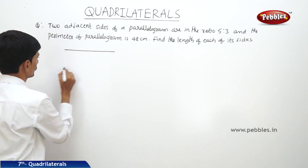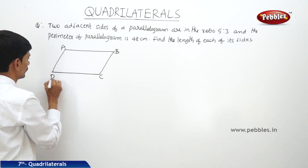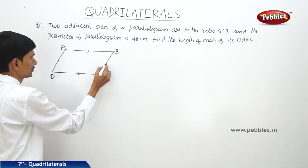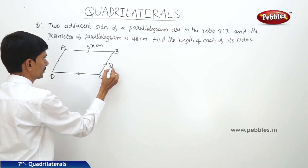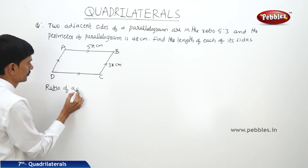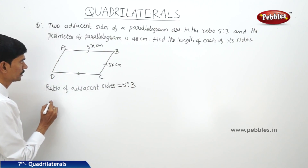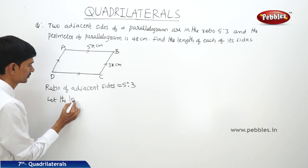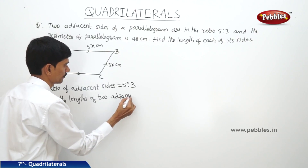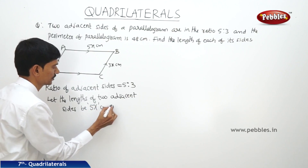There is a parallelogram in which the adjacent sides are in the ratio 5 to 3, and the perimeter is given as 48 centimeters. Let us draw a parallelogram ABCD. The two adjacent sides are in the ratio 5 to 3, so let the adjacent sides be 5x centimeters and 3x centimeters.